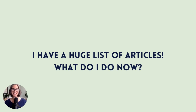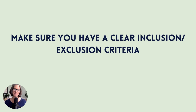So you've done your university library systematic search. You've got your truncation, your phrase searching, all your synonyms, and now you have a massive list of articles to screen. Remember, it's not uncommon to end up with about a thousand articles that you need to screen. You just go through it very methodically.